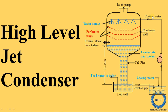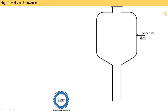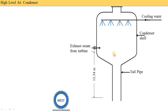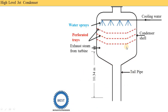What is a jet condenser? The steam from the turbine and the cooling water are directly mixed — it is called a jet condenser. Now we see the various components of the high-level jet condenser. This is the condenser cell. This is the tailpipe. In a low-level condenser there is no tailpipe, but in a high-level condenser we use the tailpipe. Exhaust steam from the turbine enters from the bottom part of the condenser cell, and cooling water is sprayed from the top — this makes it a counter-flow type, since steam and cooling water move in opposite directions. Because the height is greater, its name changes to the high-level jet condenser.